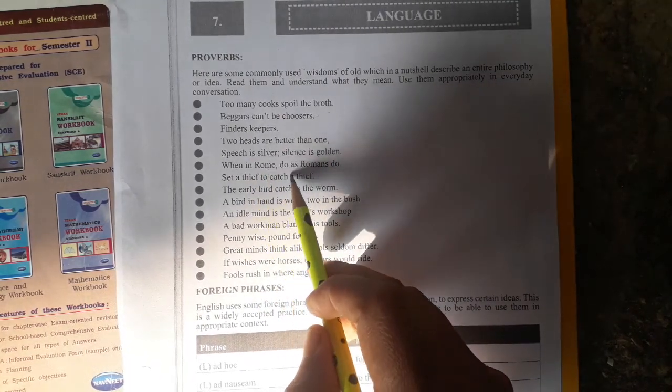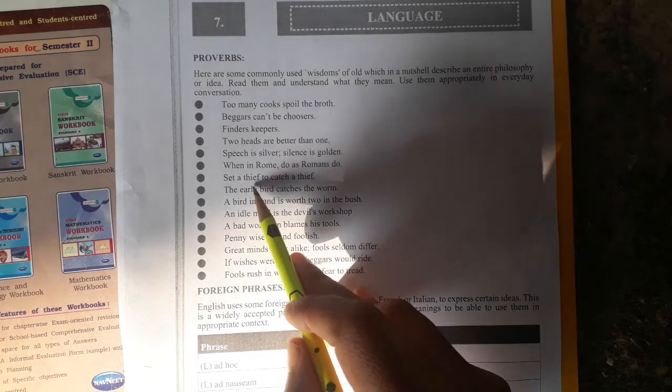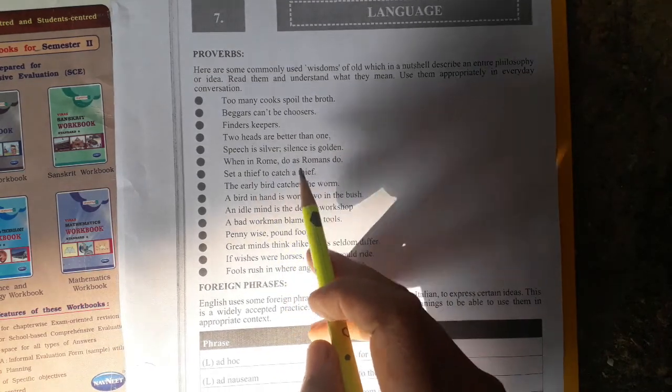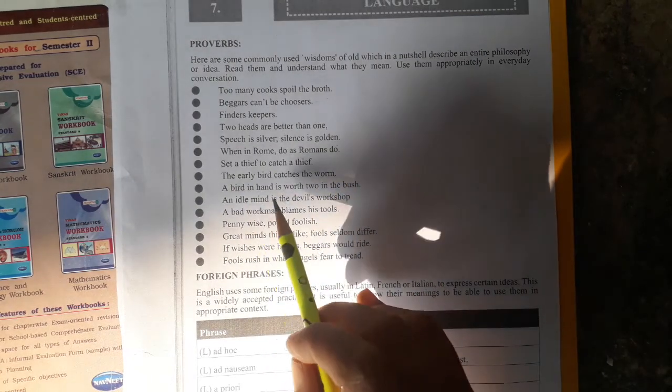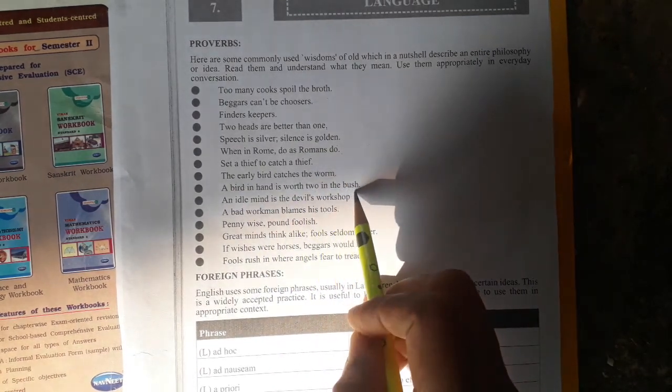When in Rome, do as Romans do. Set a thief to catch a thief. The early bird catches the worm. A bird in hand is worth two in the bush.